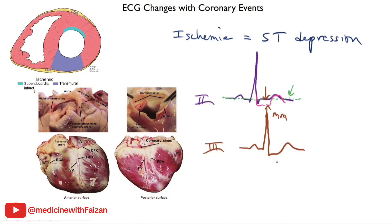That can be a sign of ischemia. If you see it in the inferior leads, it points to the inferior wall. You can also see it in the lateral leads or the anterior leads, and in that case it will be lateral wall ischemia or anterior wall ischemia.